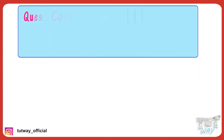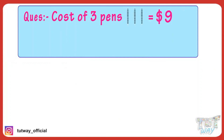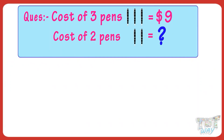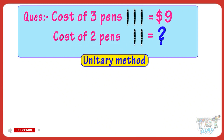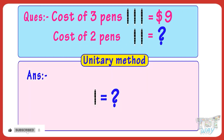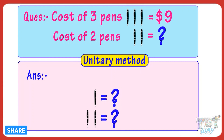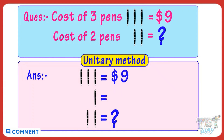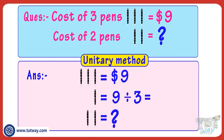Now let's take another example. The cost of three pens is $9. What is the cost of two pens? Let's find it out with the help of unitary method — first find the cost of one pen and then find the cost of two pens. If the cost of three pens is $9, then cost of one pen is $9 divided by 3, which equals $3.